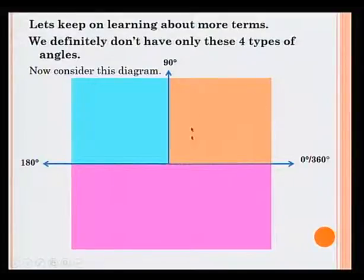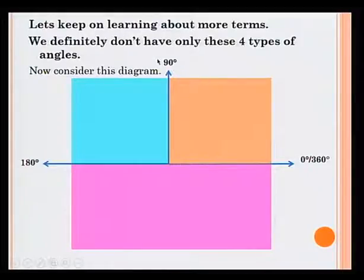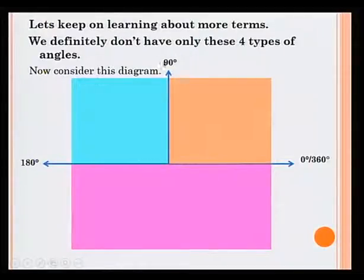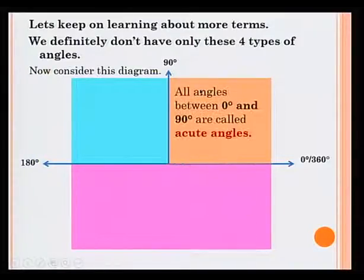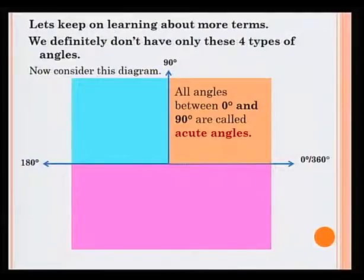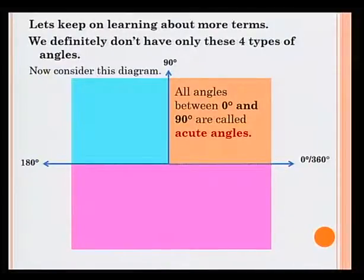Let's consider the first part: 0 degrees to 90 degrees. Remember that an angle of 90 degrees is also referred to as a right angle. All angles between 0 degrees and 90 degrees are called acute angles. For example, 2 degrees, 10 degrees or 20 degrees are all acute angles.